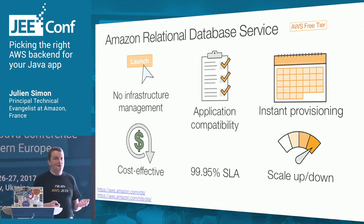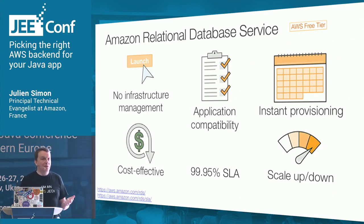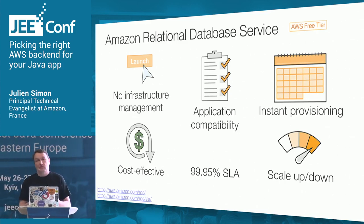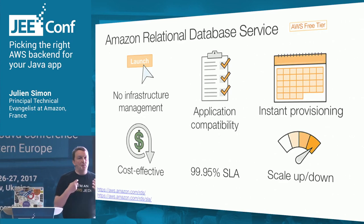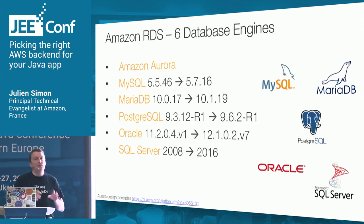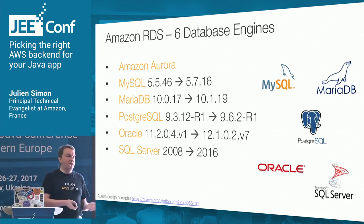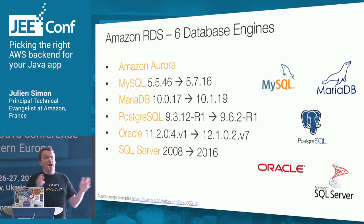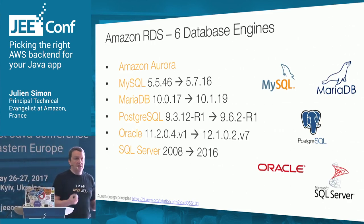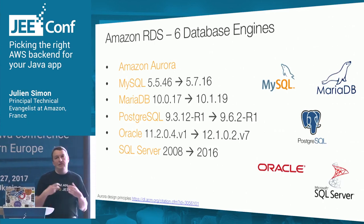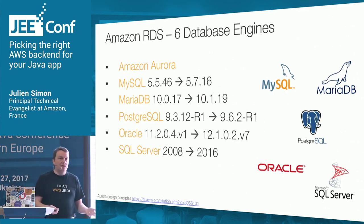Let's start with RDS. Pretty much every single application needs a relational database. The cool thing about RDS is that it's a managed service — with just a few clicks or one API call, we provide you with a database instance or cluster pre-installed with your favorite engine. You can scale it up and down, create replicas, and it's really easy — developers can do it without being a DBA.